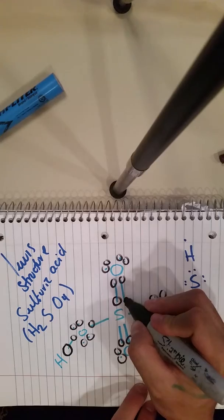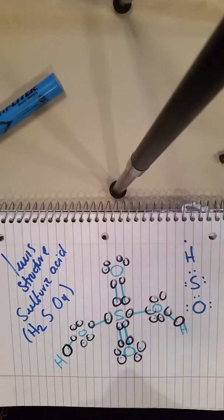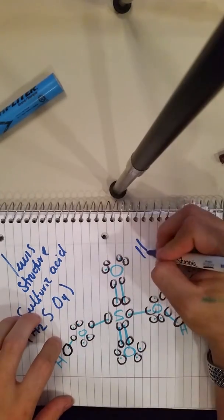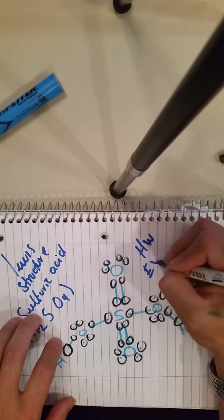And we have one, two, three, four, five, and six for sulfur. That's complete. So this is homework, Sample 11.